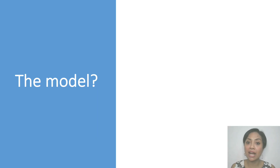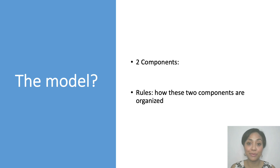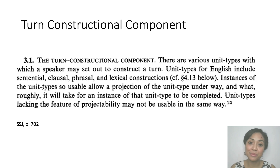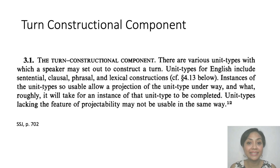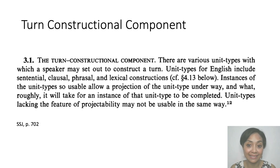So how does the model account for those observations? The proposed model consists of two components and a set of rules. The first one is the turn constructional component, and the second one is the turn allocation component. The turn constructional component is basically what makes up a turn. This may seem trivial, but people do not speak in full sentences all the time. A system that governs natural conversation should be able to account for that. Hence, some kinds of socially organized and mutually intelligible units that are not exclusively sentences should exist, and the production of a single such unit is sufficient to constitute a well-formed, sensible conversational turn.